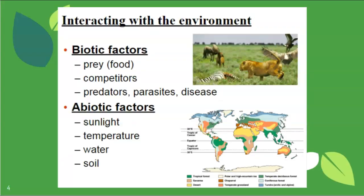When we look at interactions, we can divide them into biotic and abiotic factors. We'll spend a lot of the unit talking about biotic factors in detail, so I'm just going to glaze over them here. Biotic means life-based — factors happening because of other living things, like prey, predators, parasites, disease, and competition. Abiotic factors are not life-based but still have a big impact: sunlight, temperature, water, and soil.